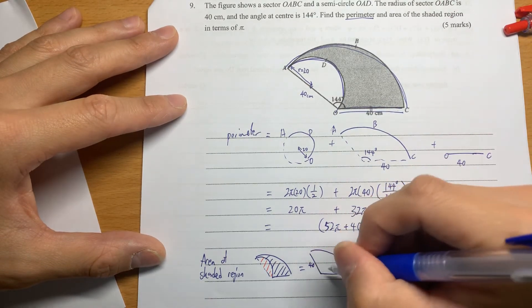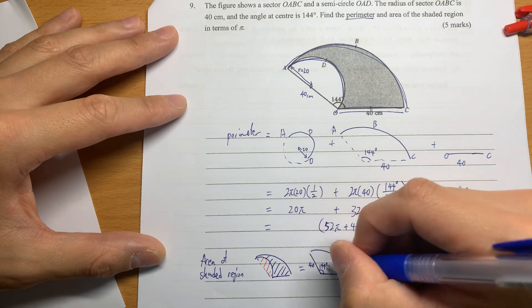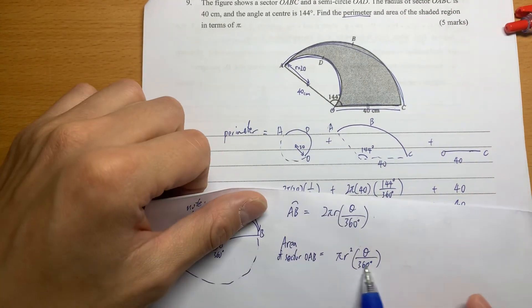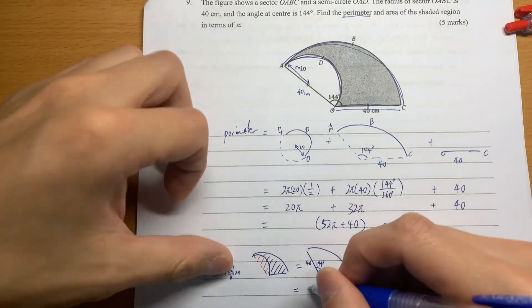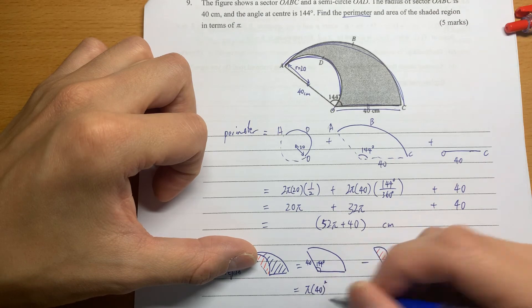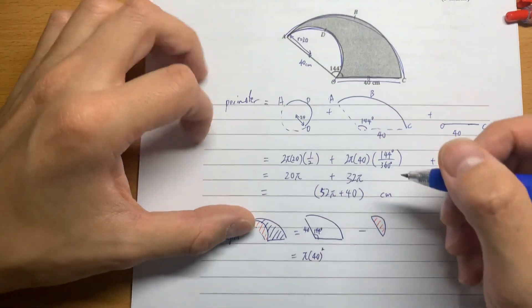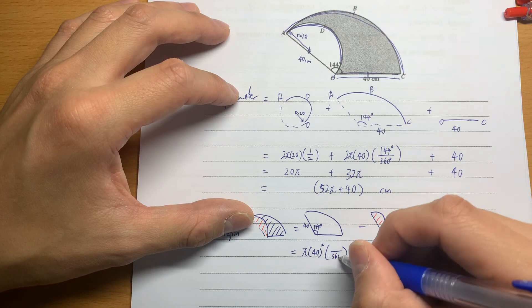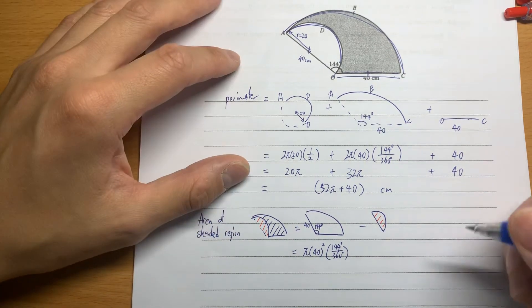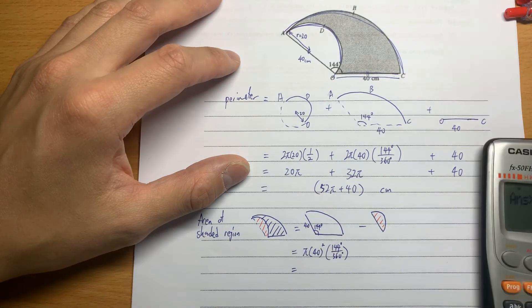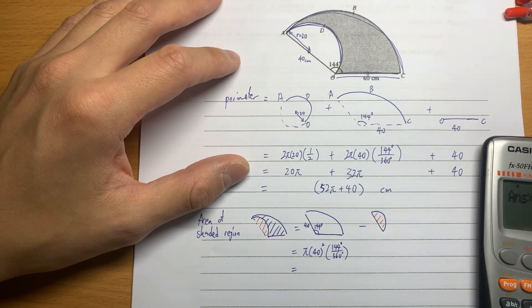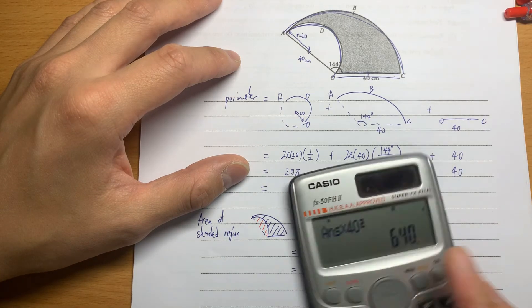So again, 40, and then 144 degrees. Focus here first. If we use the area formula, πr², r here is 40. And then again, we don't have the complete circle. It is out of 360 degrees, we got 144 from it only. So 144 divided by 360, and then times 40 squared. We got 640π.